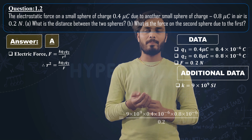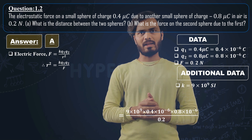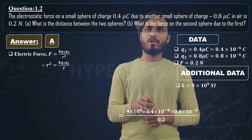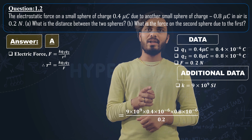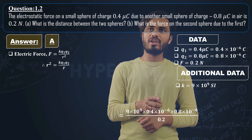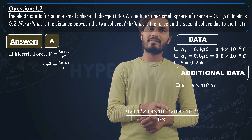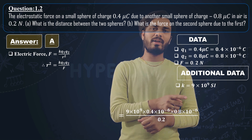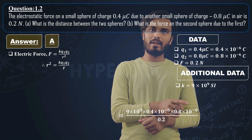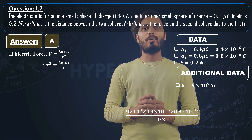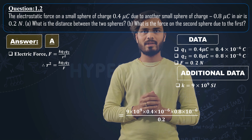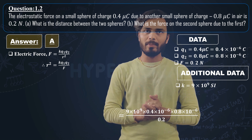Next step, we substitute values: r square equals 9 cross 10 raise to 9 (value of k), into 0.4 cross 10 raise to minus 6 (value of q1), into 0.8 cross 10 raise to minus 6 (value of q2), divided by 0.2 (that is F).